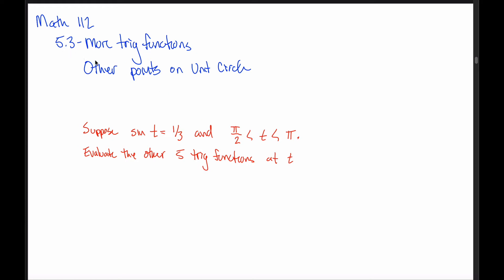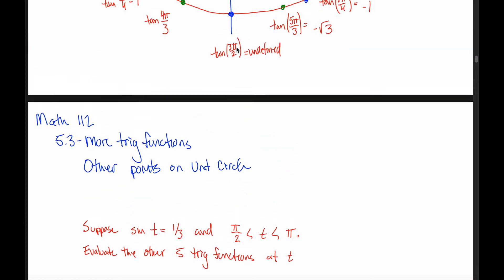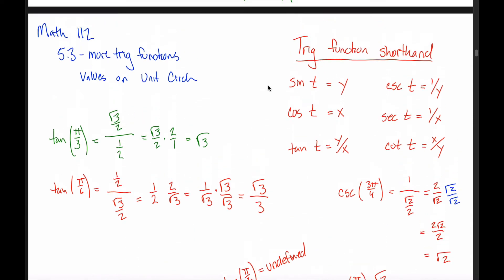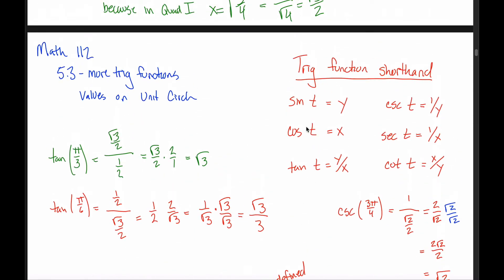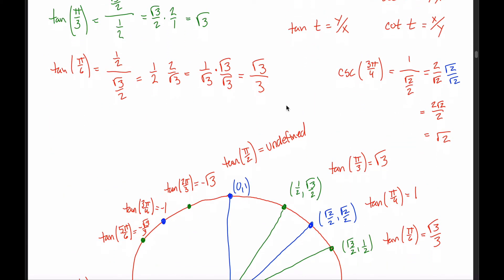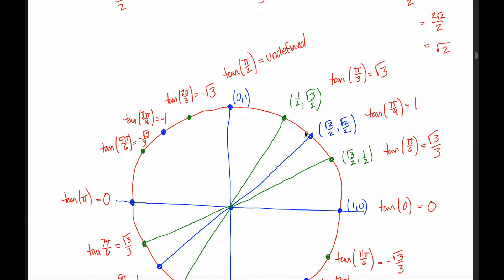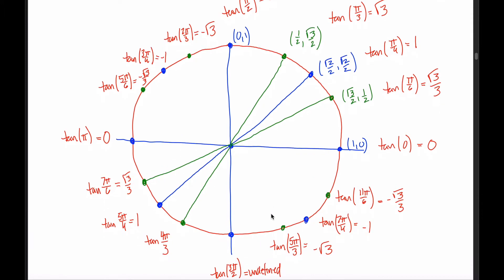One more video on 5.3. The idea of 5.3 is we introduce these additional trig functions. We introduced sine and cosine in 5.2. In 5.3, we add on the other four trig functions: tangent, cosecant, secant, and cotangent. The most natural way to break this up was to think about the value of these functions at the 16 memorized points on our unit circle — that was the previous video.